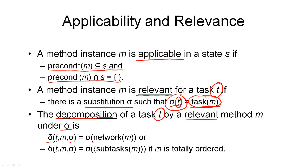And it simply returns the instantiated network that is associated with the method. So every variable in this network is replaced according to the substitution. Or if the task was totally ordered, then we can return the sequence of subtasks instantiated with the substitution σ. That is what we call the decomposition, and δ is the decomposition function for a task given a method and a substitution.